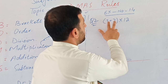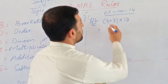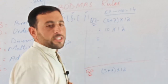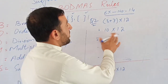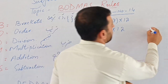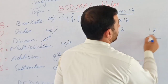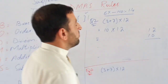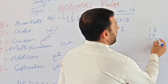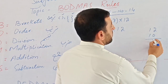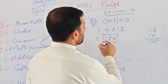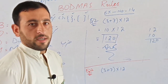For question 2, we have brackets first. The expression inside the bracket is 3 plus 7. We solve the bracket first: 3 plus 7 equals 10. Then we multiply: 10 multiplied by 12. The answer is 120. That is the answer to question 2.